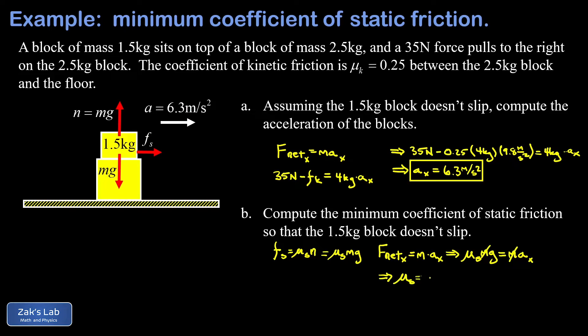I get that mu s, the coefficient of static friction corresponding to the static friction force being maxed out, is given by the acceleration we're looking at divided by g.